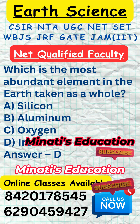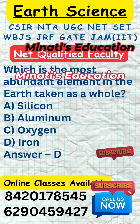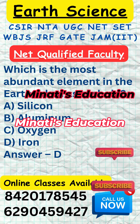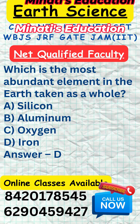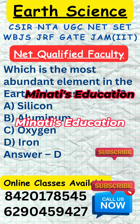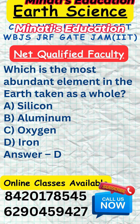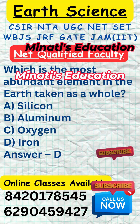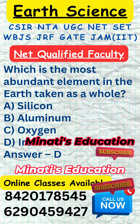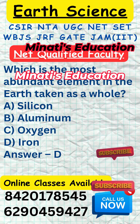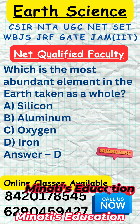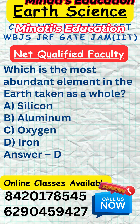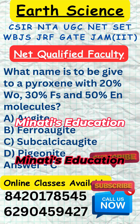Which is the most abundant element in the earth taken as a whole? a. Silicon, b. Aluminum, c. Oxygen, d. Iron. Answer: D. Iron is the most abundant element in the earth as a whole, primarily due to its prevalence in the earth's core. The earth's core is mostly composed of iron and nickel, making iron the most abundant element by mass in the entire planet.